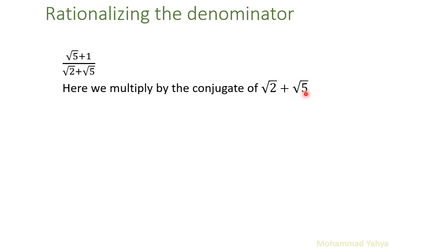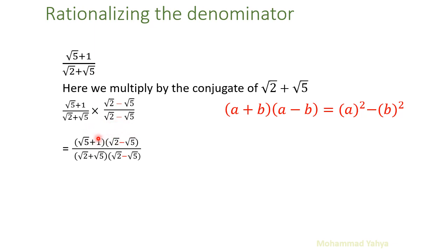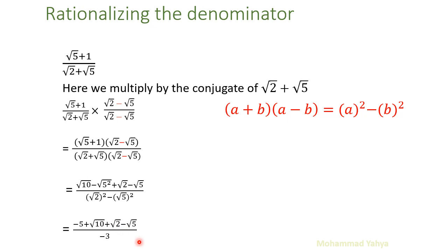For our final example we need to rationalize the given expression. We multiply by the conjugate of (radical 2 + radical 5), which is (radical 2 − radical 5) — just change the sign. The denominator will be in the form (a + b)(a − b), giving a² − b². In the numerator we expand: radical 5 times radical 2, radical 5 times negative radical 5, 1 times radical 2, and 1 times negative radical 5. We do the math and here is our final answer.